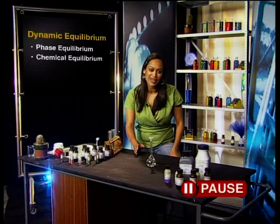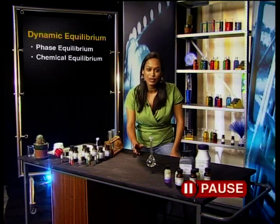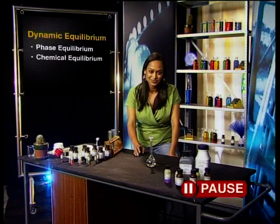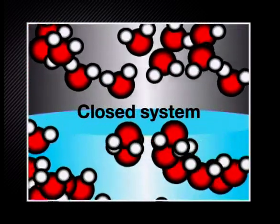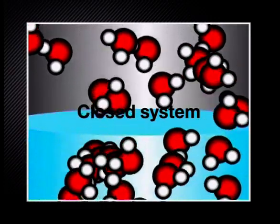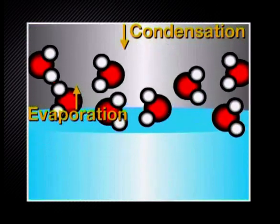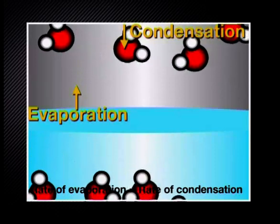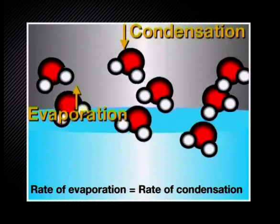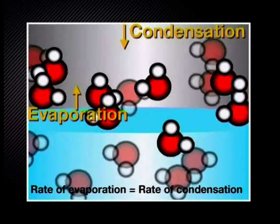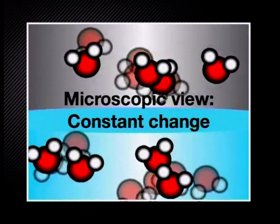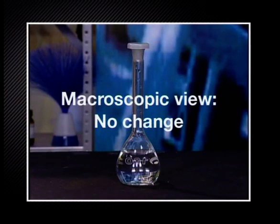Can you identify the characteristics of a dynamic equilibrium from the example we have studied so far? Compare your list to mine. Dynamic equilibrium happens when we have a closed system. There must be reversible processes that happen at the same time. The rate of the forward process equals the rate of the reverse process. Remember, conditions such as temperature, pressure, and concentration must remain constant. On a microscopic view, there is constant change, but on a macroscopic view, it seems as though there is no change taking place.